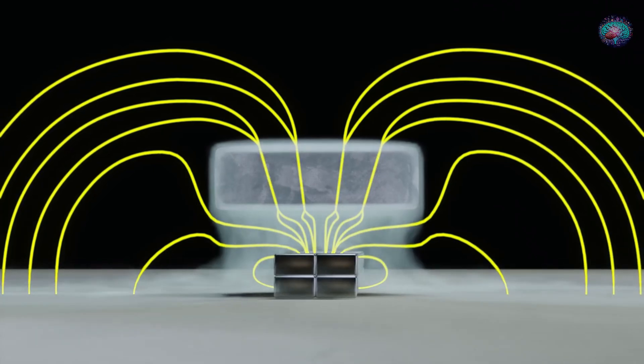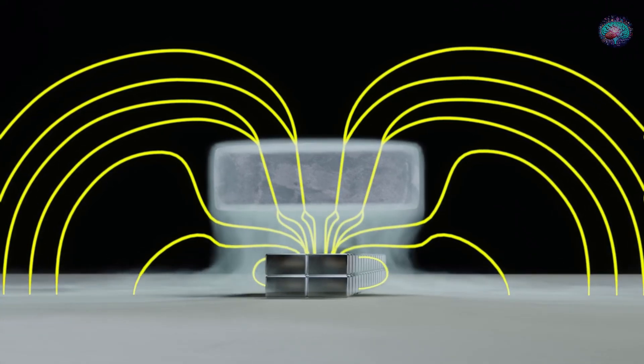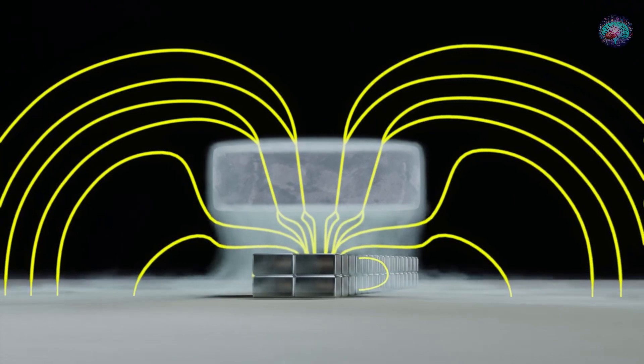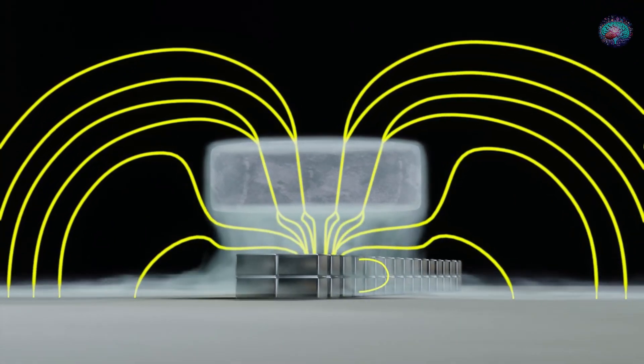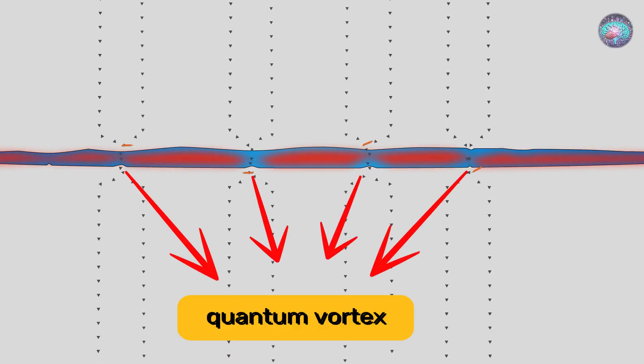For type 2 superconductors, the external magnetic field is not completely expelled. Instead, there is still a very small amount of magnetic flux penetrating the material, and these flux lines appear in the form of particles called quantum vortices.